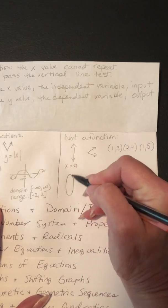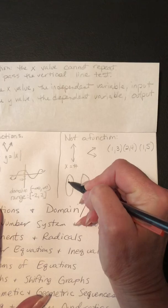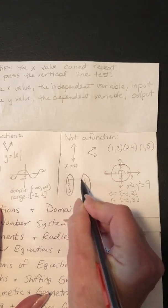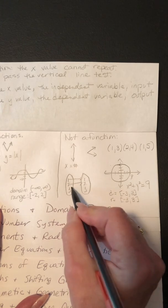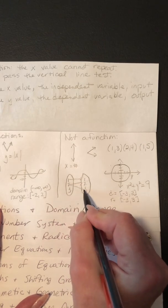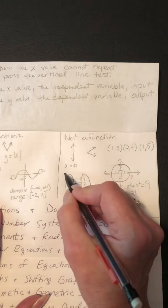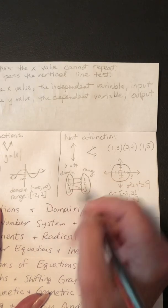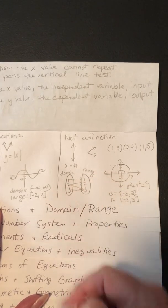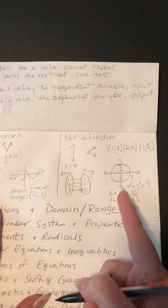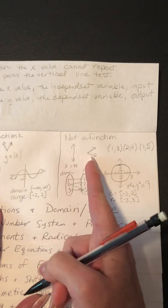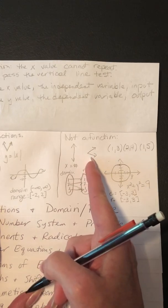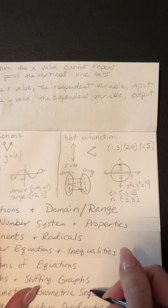If we did it in mappings, say we have 1, 2, 3 on the domain side and 1, 2, 3 on the range side. If 2 has an arrow going to both 1 and 2, it's already not a function — we could call these input and output, or x and y. This was the review of functions and domain and range.